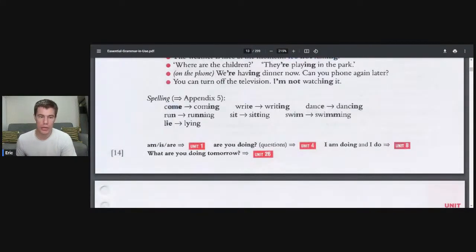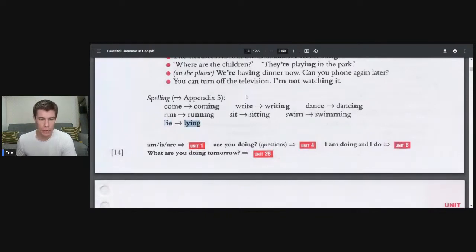Here we've got where you can change the verb into the present continuous tense with the ing. Come, coming. So it ends in an e and it falls away and you add the ing. Write, writing. Dance, dancing. Now if you've got a short verb like this, you can say run, running. Sit, sitting. Swim, swimming. And then if you've got lie, then it's going to change to a y, lying.